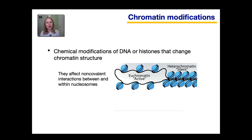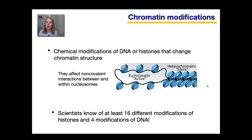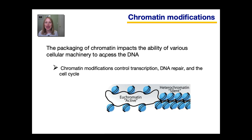When I said that eukaryotes can control chromatin modifications, what I meant is that our cells can regulate the addition of chemical modifications to DNA or histones that change chromatin structure. These chemical modifications affect the non-covalent interactions between nucleosomes and within nucleosomes. Scientists know of at least 16 different modifications to histones and at least four different modifications of DNA — an incredible variety. This packaging of chromatin impacts the ability of various cellular machinery to access the DNA, and those chromatin modifications can control transcription, DNA repair, and the cell cycle.